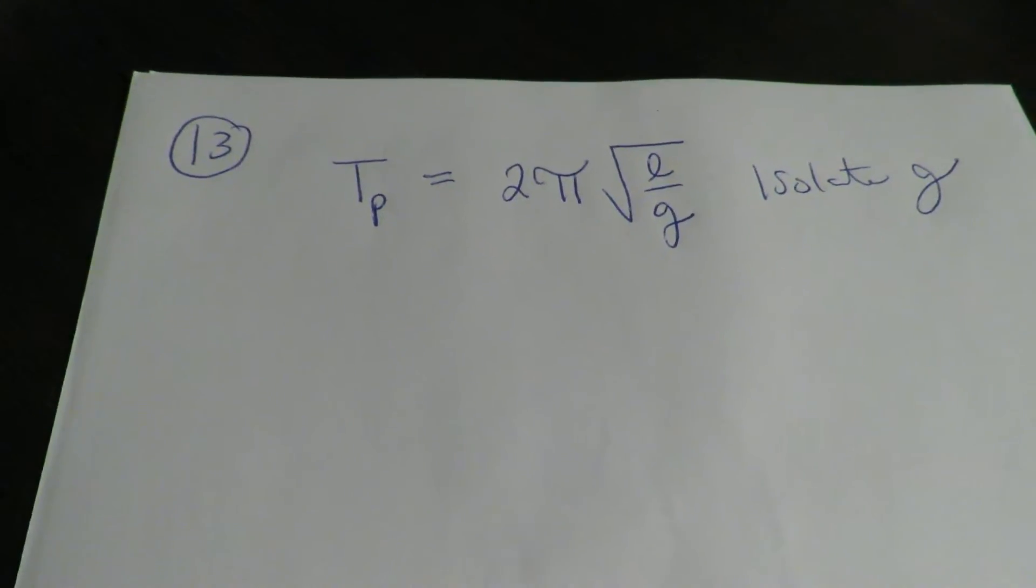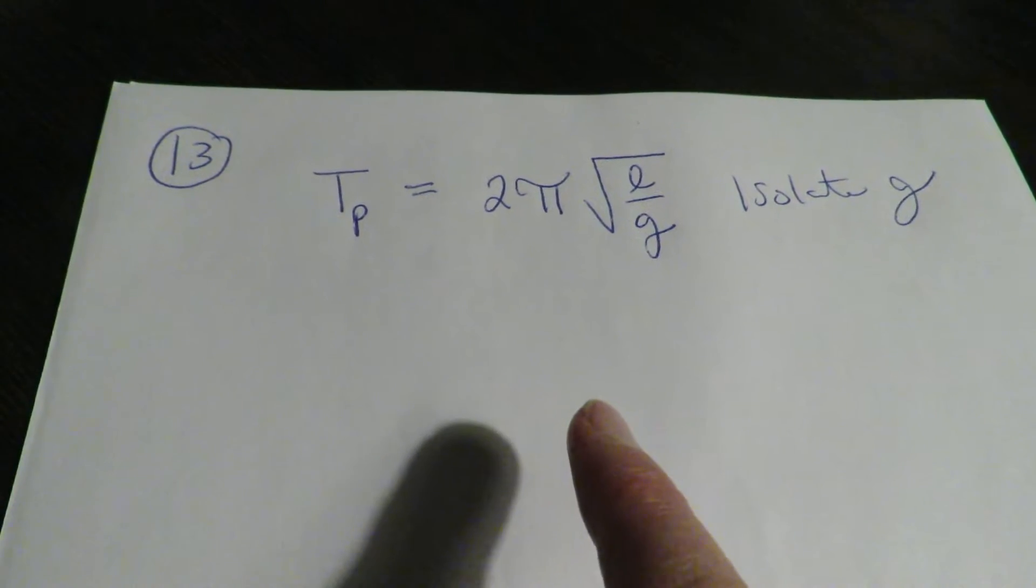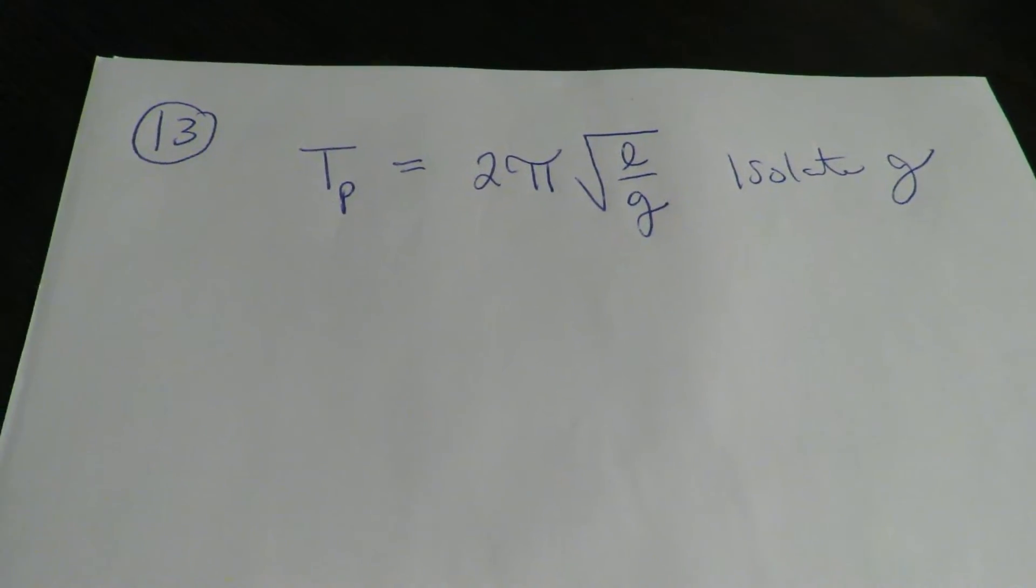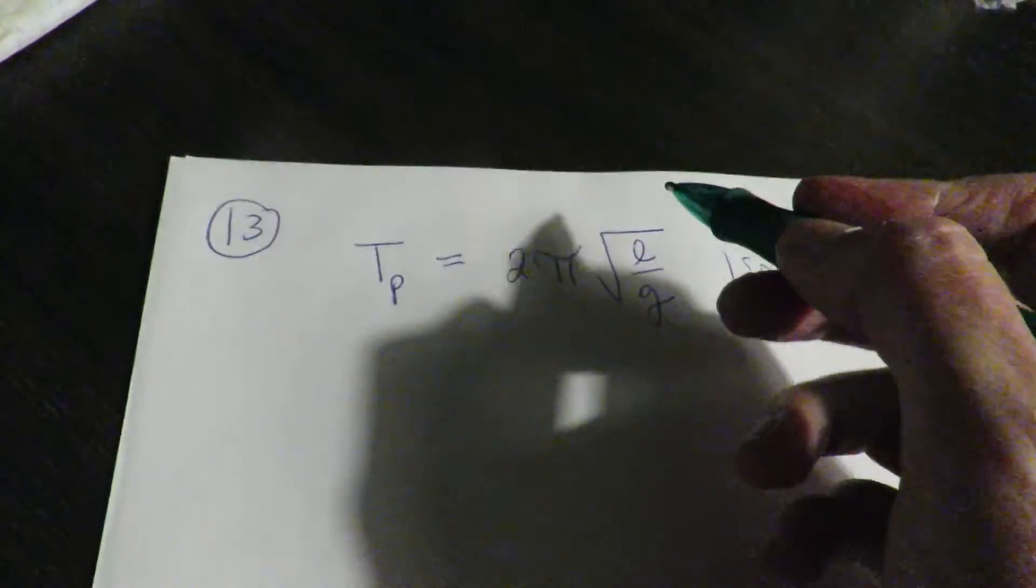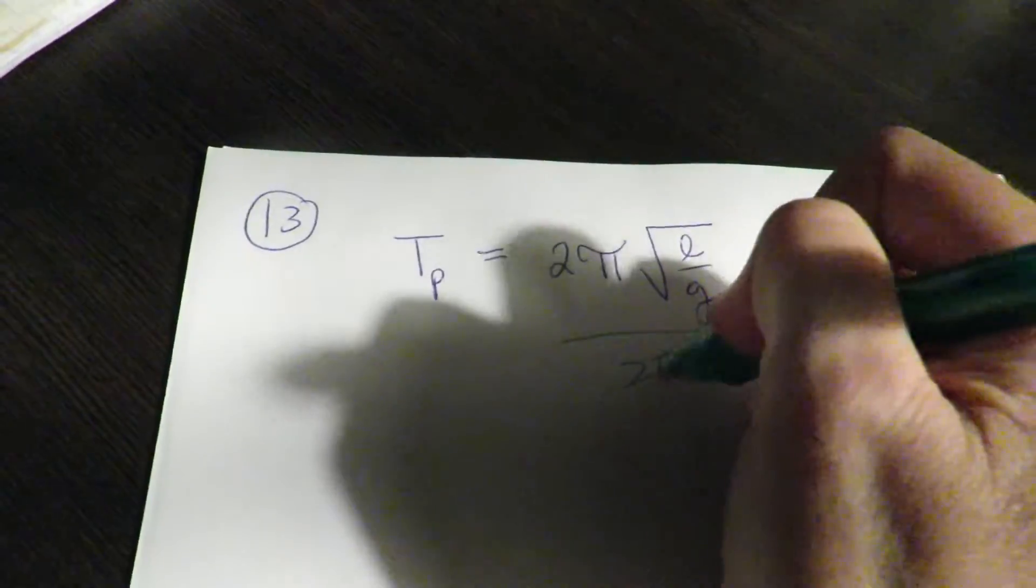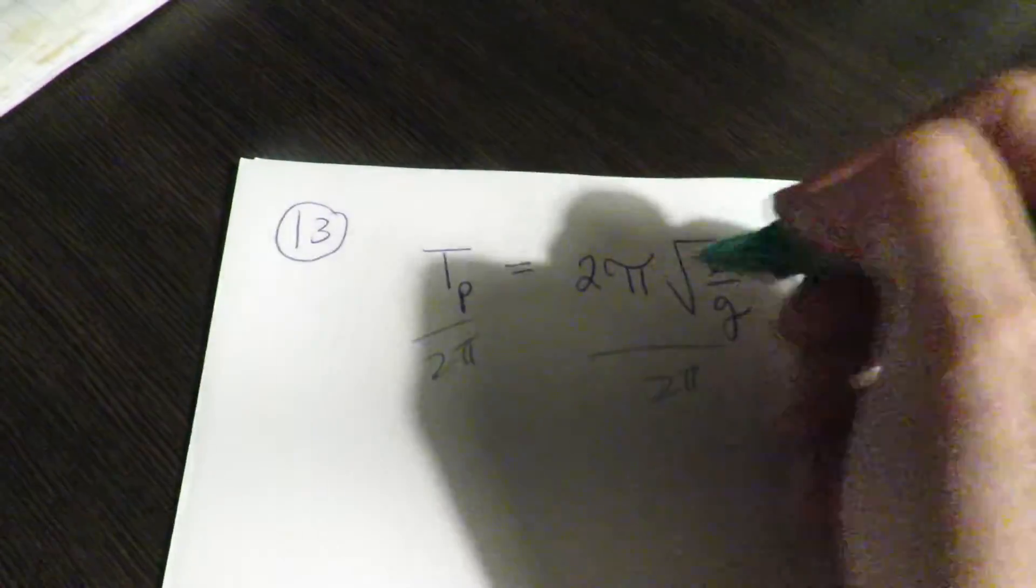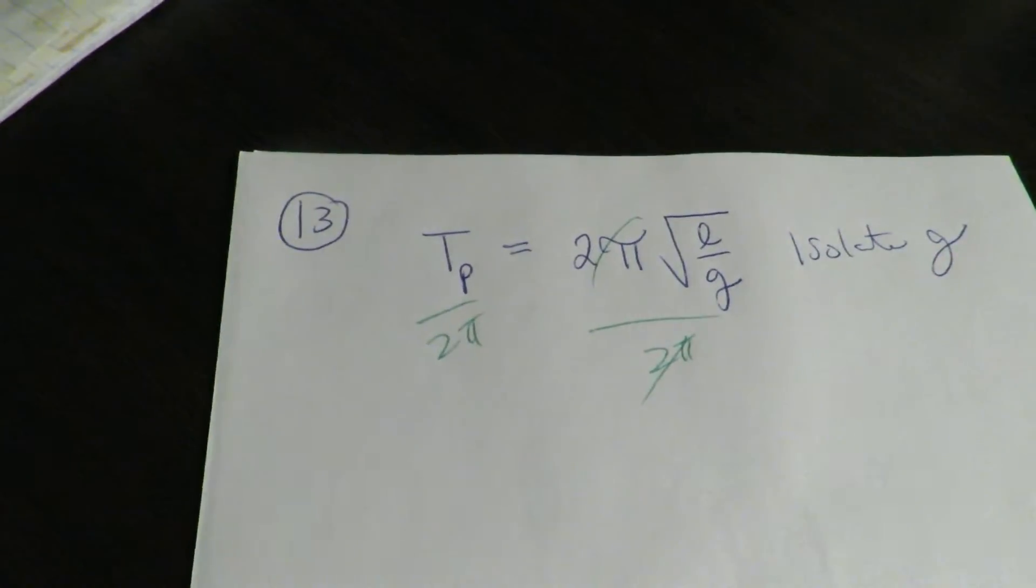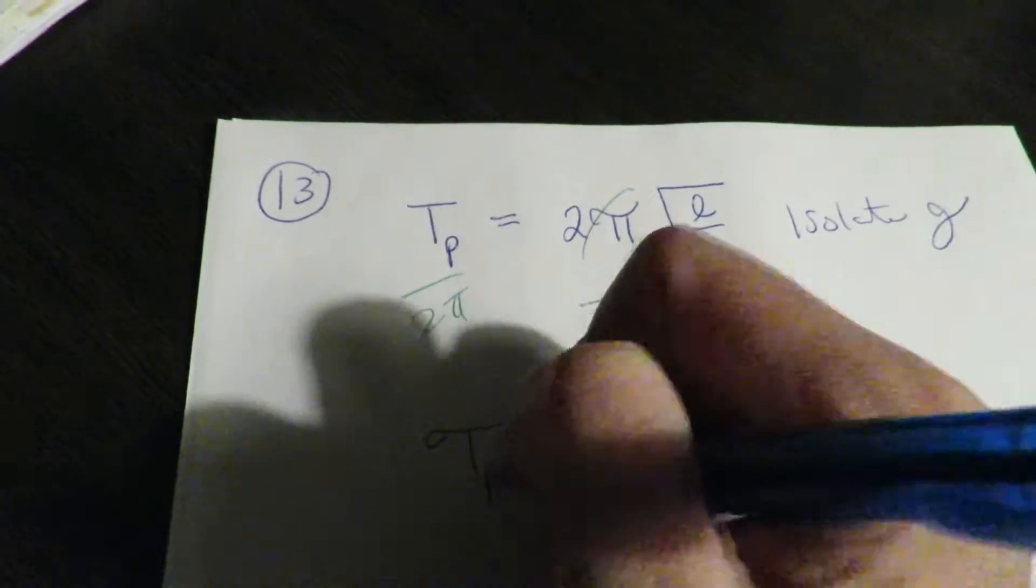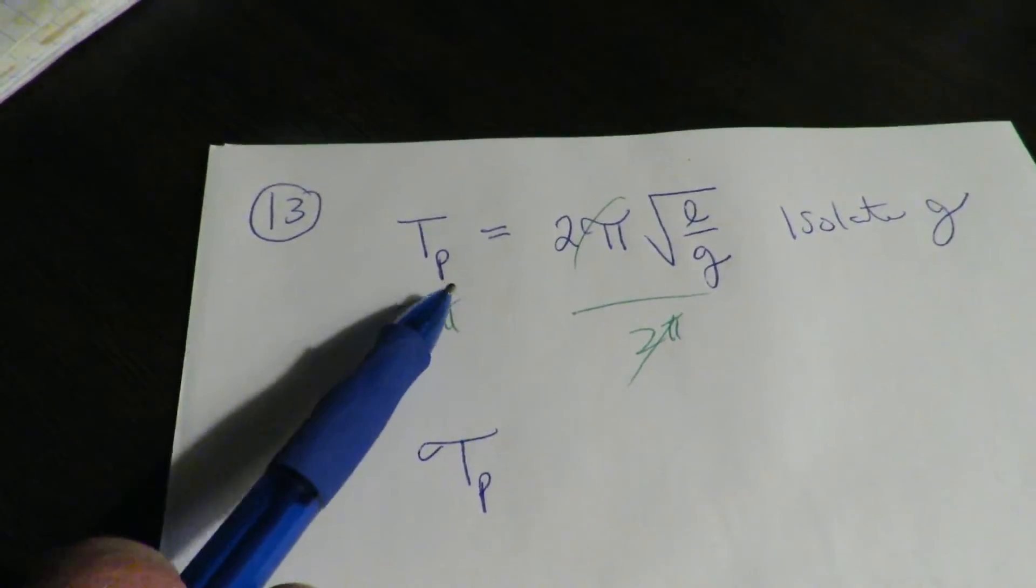The first thing you want to do is isolate the radical. I mean, you could technically work with it as it is, but let's divide off the two pi. This is T sub P.